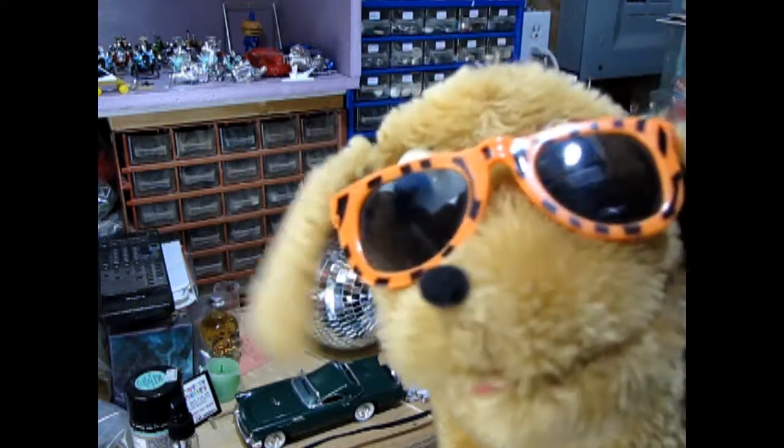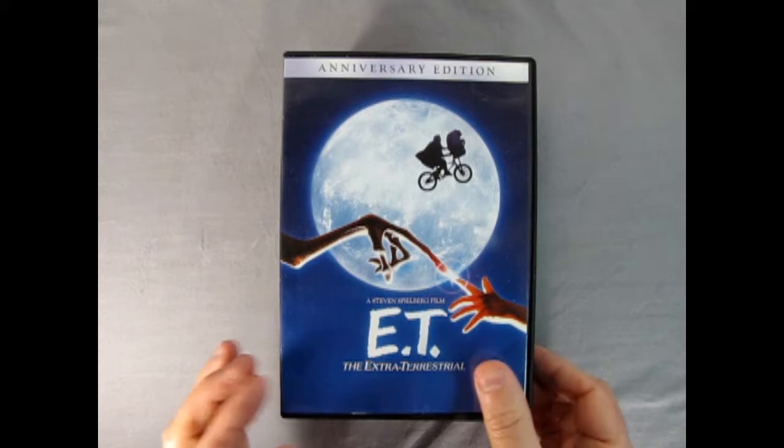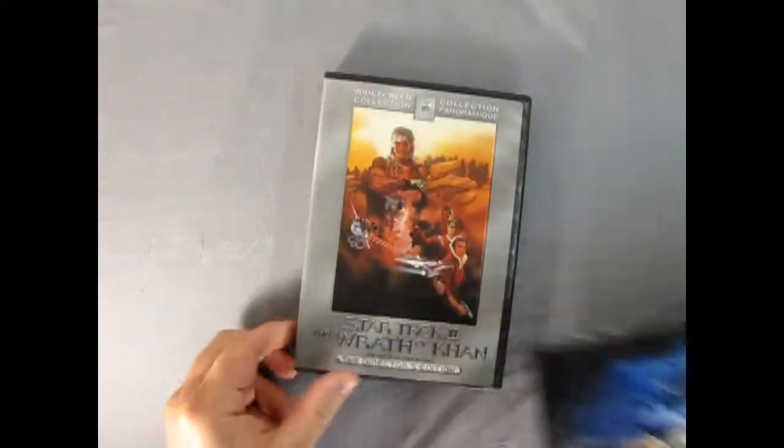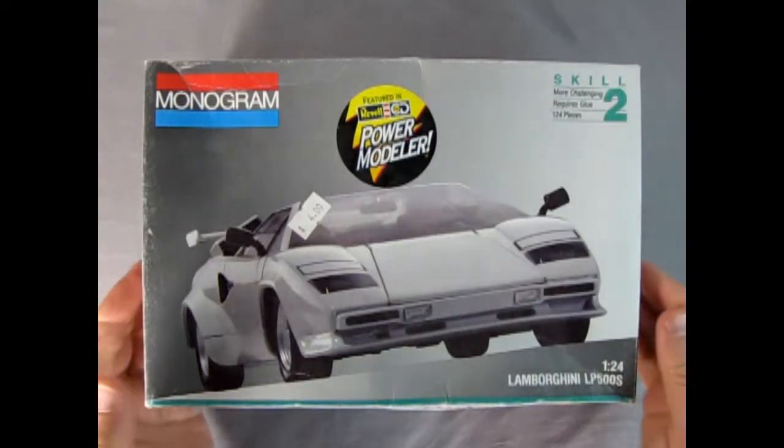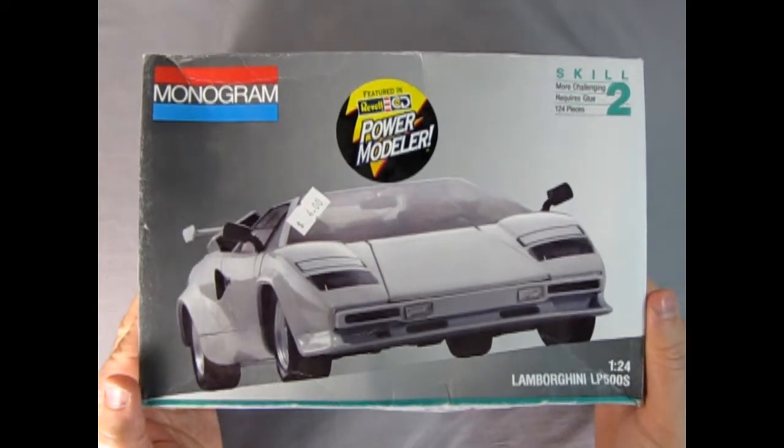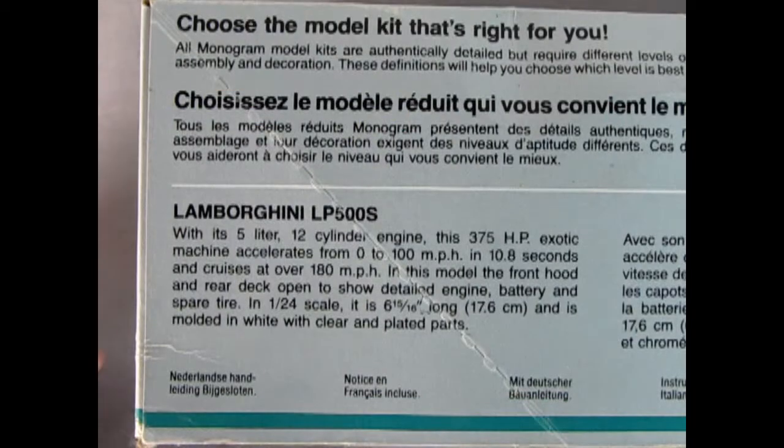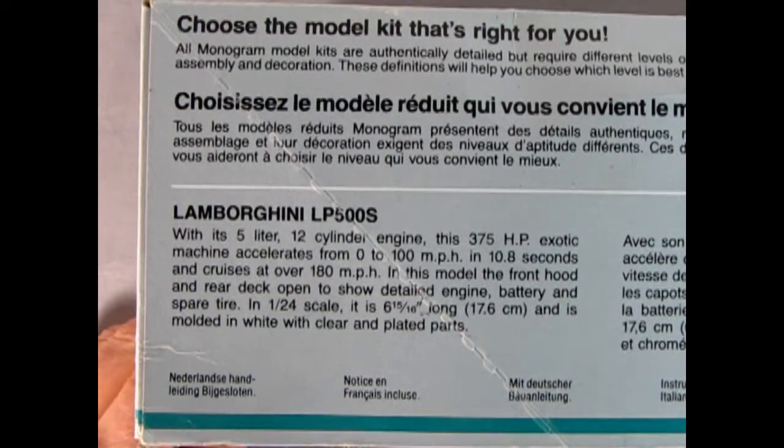1982 was an excellent year for everything: movies, music, and model kits. We got great movies like E.T., The Dark Crystal, Conan the Barbarian, Blade Runner, and Star Trek: The Wrath of Khan. We also got this amazing Lamborghini LP500S from Monogram. Now this is a later edition of this kit, however you can see just how cool this thing is.